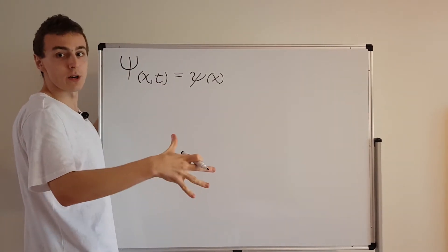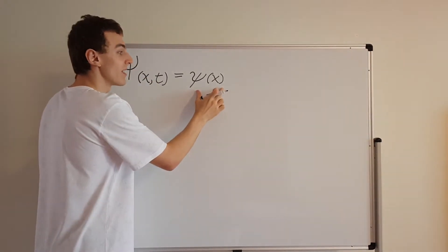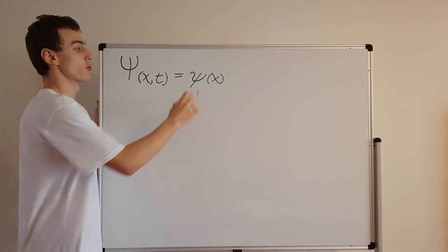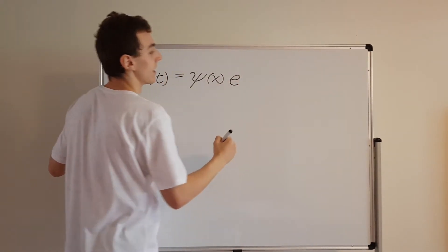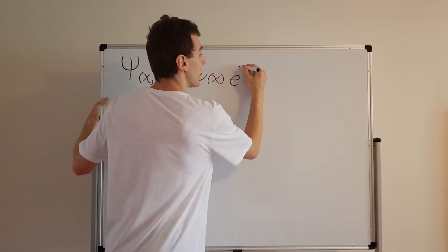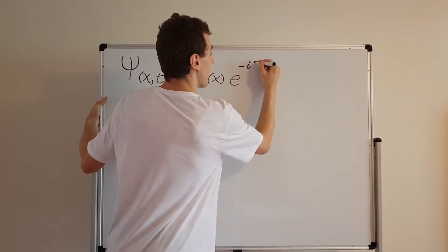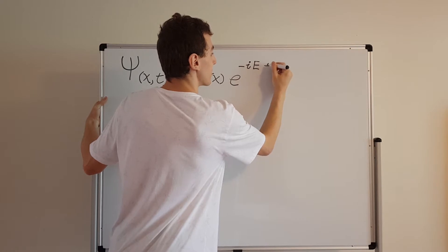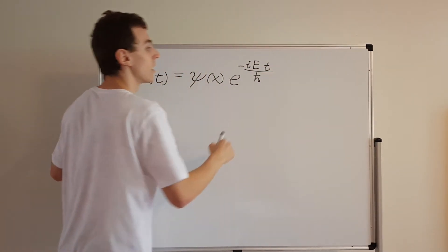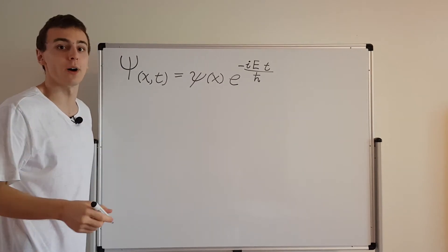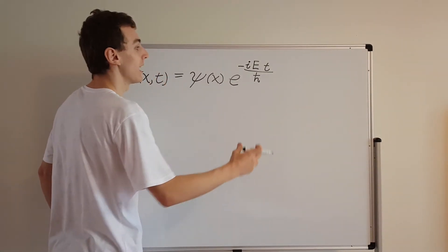The time-dependent Schrödinger equation is the one that the full solution Ψ satisfies, while ψ(x) satisfies the time-independent Schrödinger equation. We also have to add on our exponential factor which has a negative i in it — it's a complex exponential. We have the energy and time, and we're dividing by ℏ. ℏ is Planck's constant over 2π — the reduced version of Planck's constant, with the 2π absorbed inside.